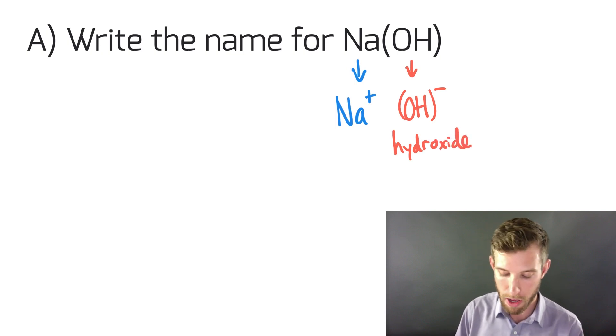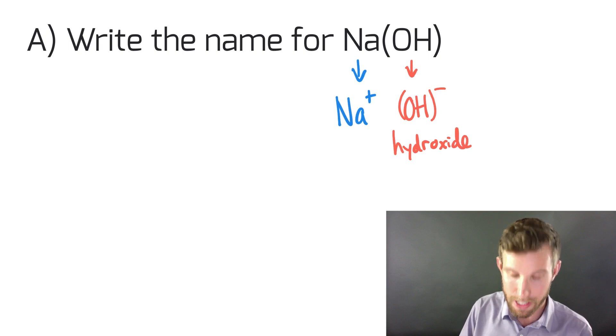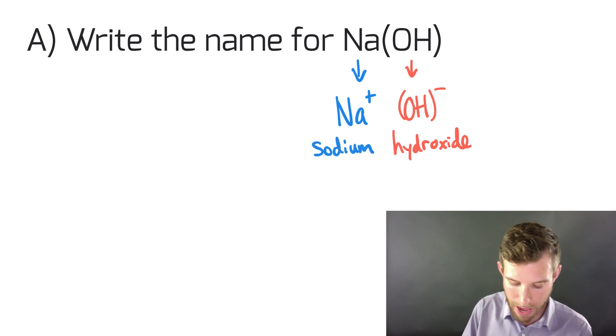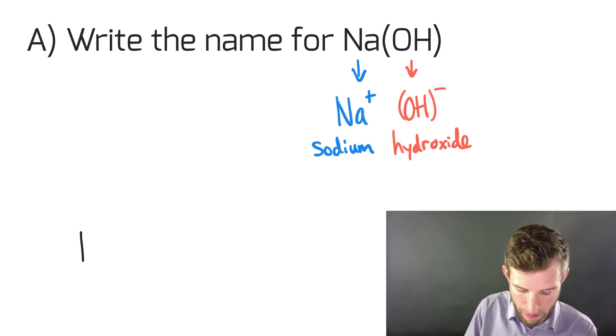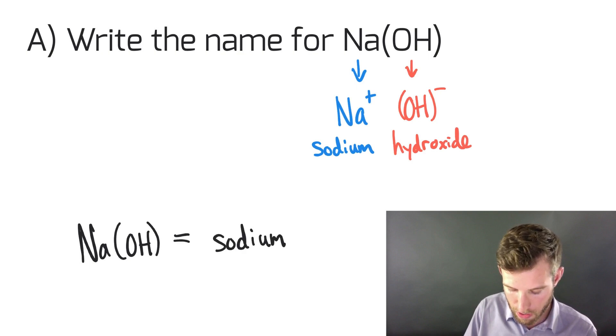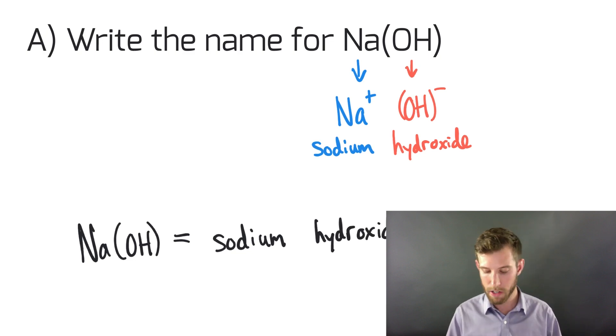I also know that the name of my metal, Na+, or the cation in this case, is sodium. When I put that full name together, the correct name for NaOH equals sodium hydroxide.